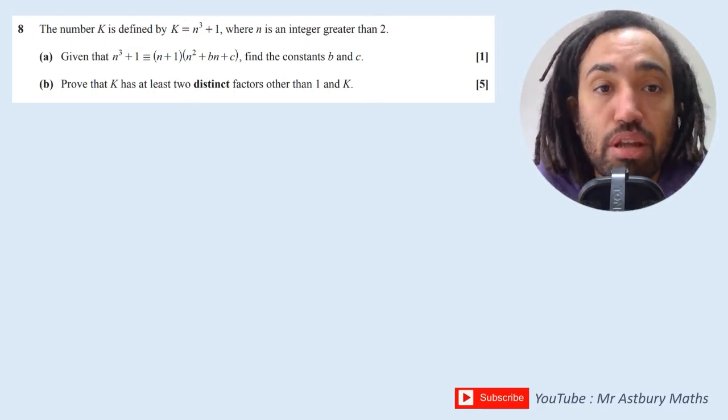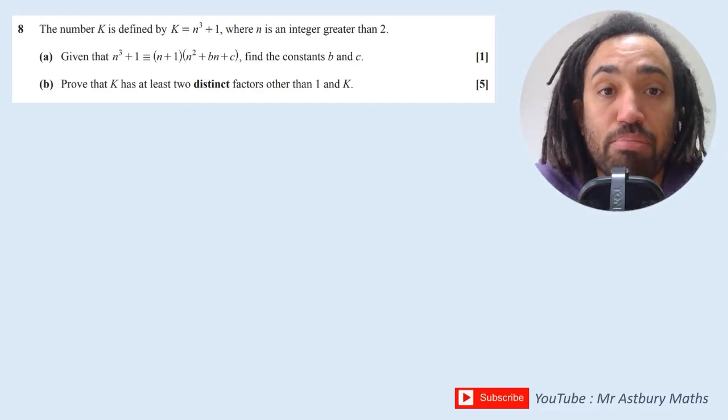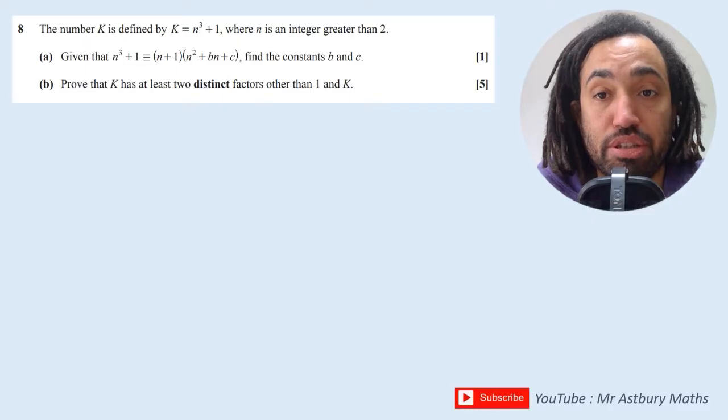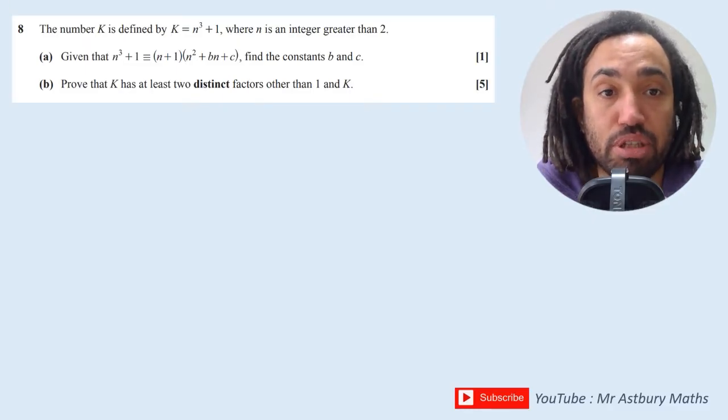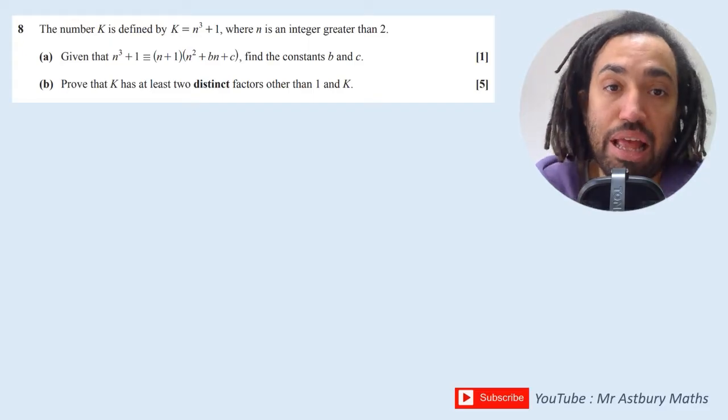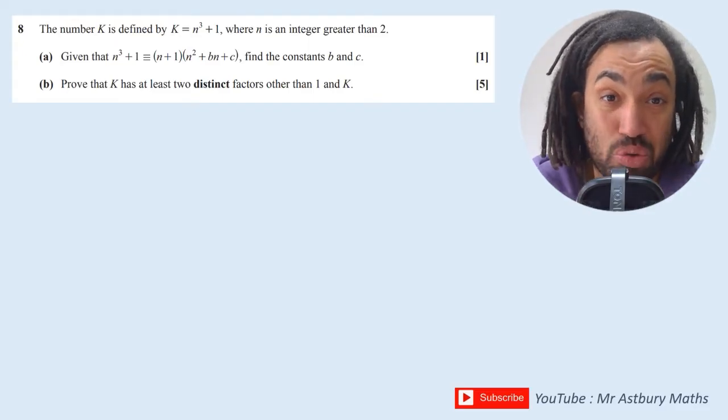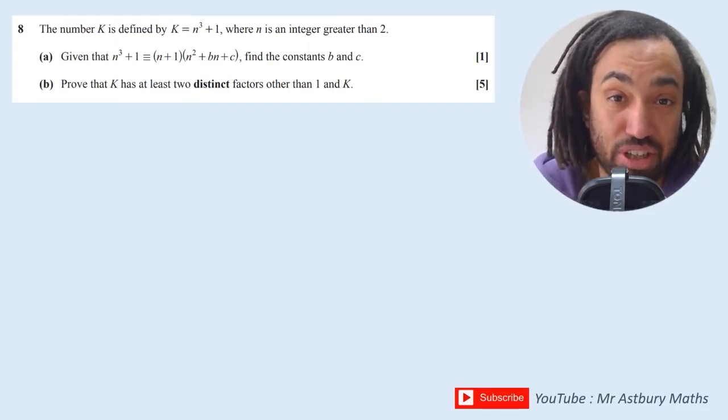Okay, the number k is defined by k = n³ + 1 where n is an integer greater than 2. The first question says given that n³ + 1 = (n + 1)(n² + bn + c), find the constants b and c.